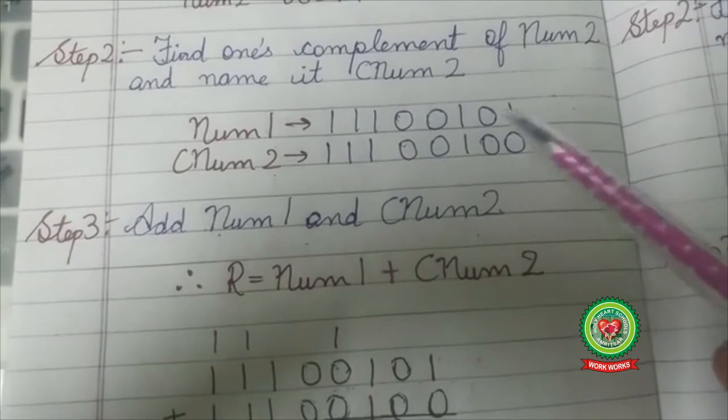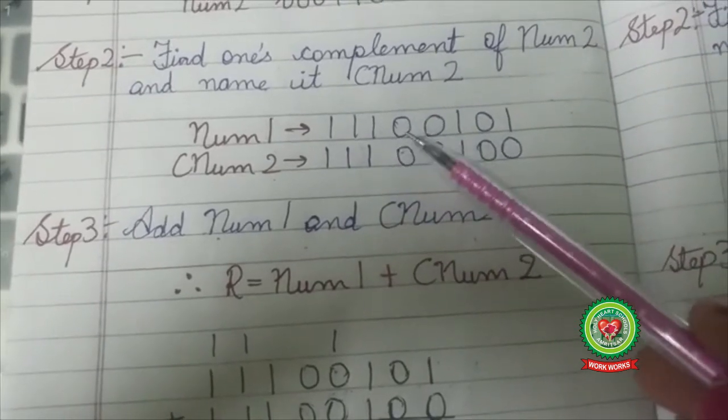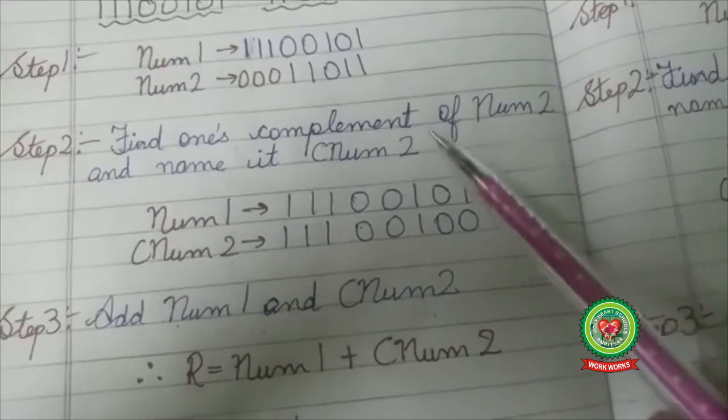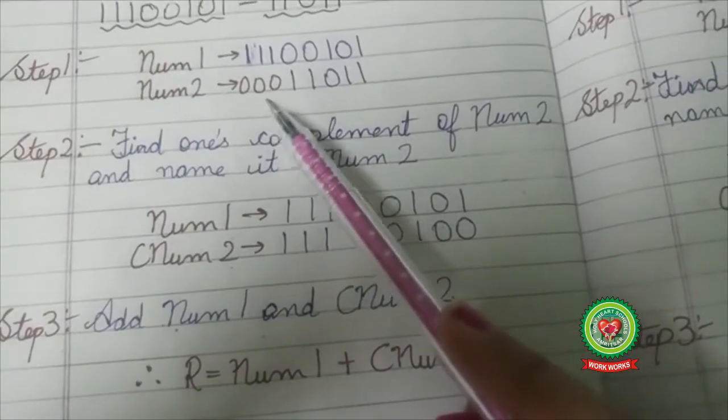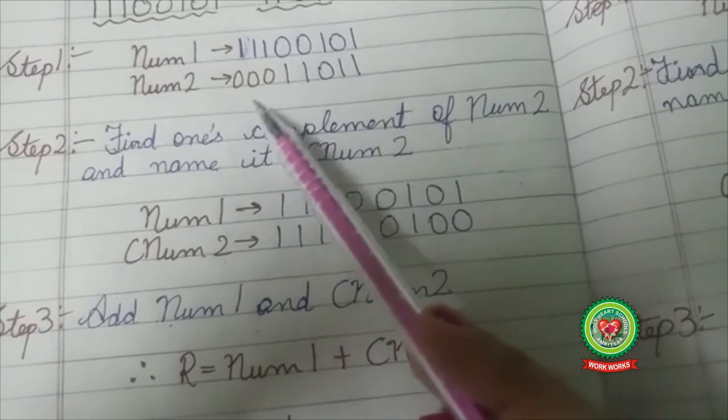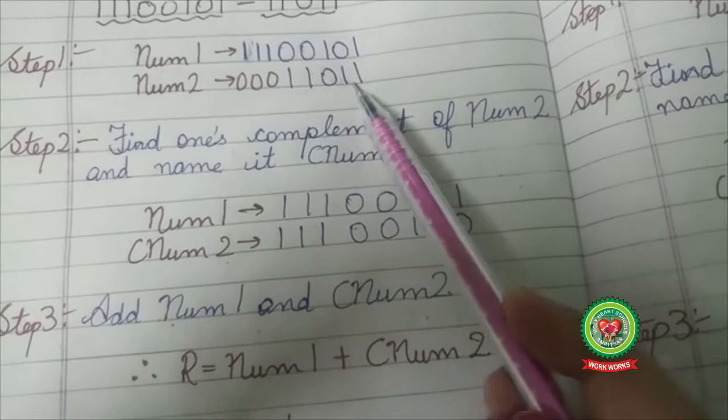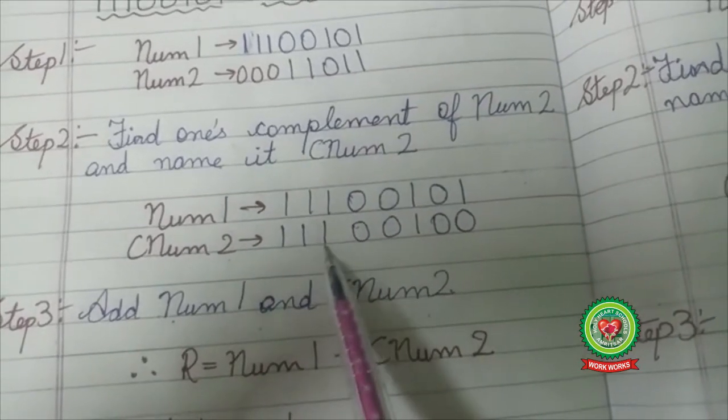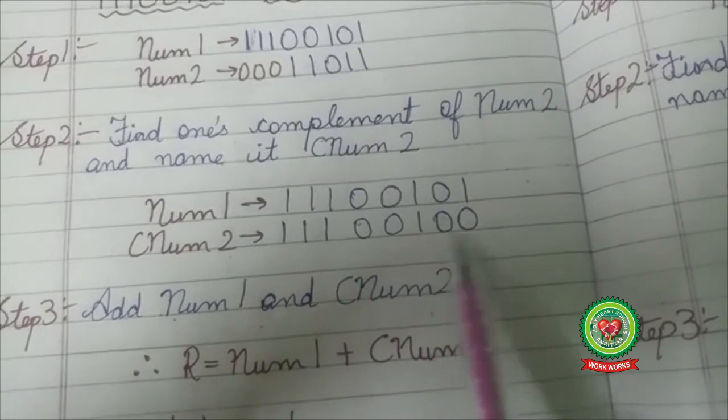So here 11100101 is the first number and second number is 00011011. I am going to find the complement of this number and my answer is 11100100.